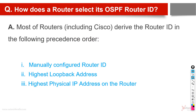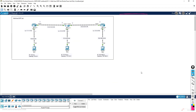How does a router select its OSPF router ID? In an OSPF domain, just like we discussed, each router has a router ID, but the question is how does this router get its router ID?